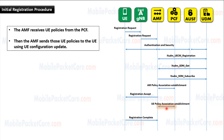Then the AMF performs UE policy association with the PCF. Accordingly, the AMF receives UE policies from the PCF, and then the AMF sends those UE policies to the UE using UE configuration update.